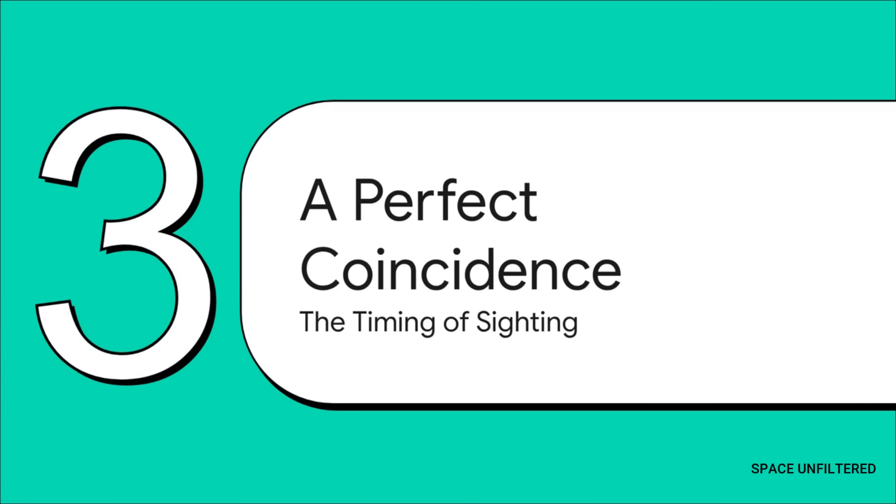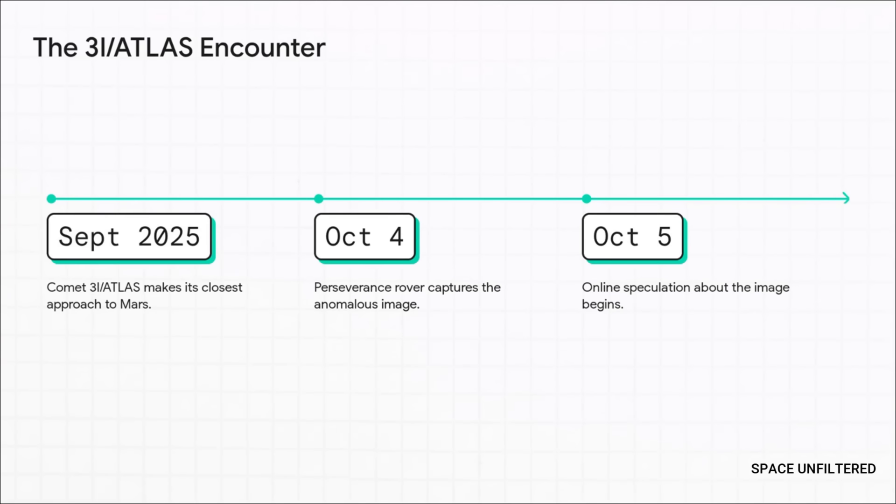And this is where the story gets really compelling. The whole case for this object being 3I-Atlas gets much stronger when you just look at the calendar. The timing is what turned this from just another glitch into a possible historic observation. So check this out. In September of 2025, comet 3I-Atlas makes its closest pass by the planet Mars. Then, just a few weeks later, on October 4th, bam, the rover captures this image.